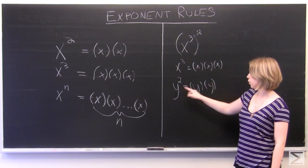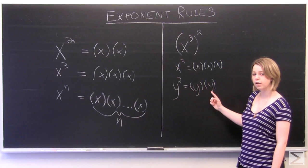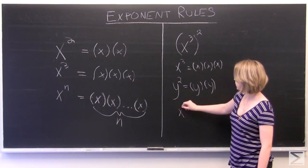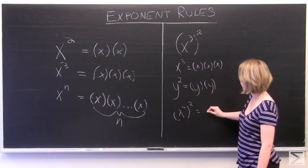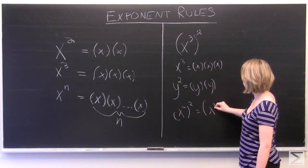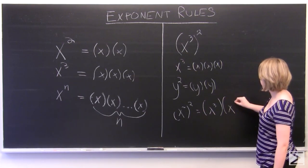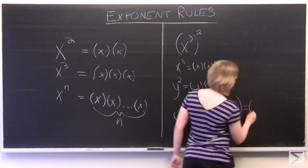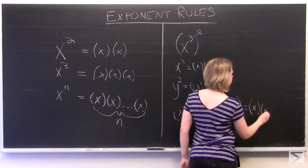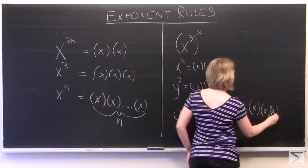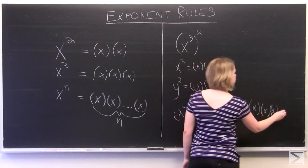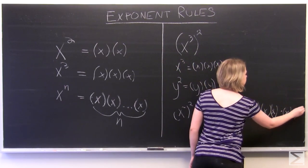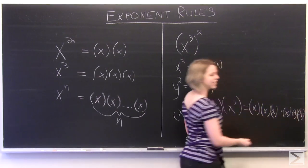So we'll take our y squared, but every time we have a y, we'll use x cubed. So that means that x cubed to the power of two is going to equal x cubed times x cubed, which simplifies to x times x times x, for our first x cubed, times x times x times x.